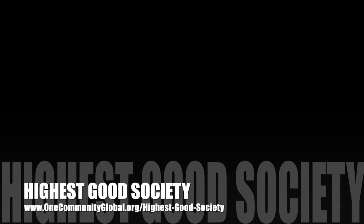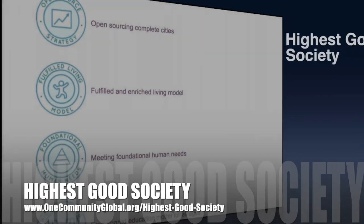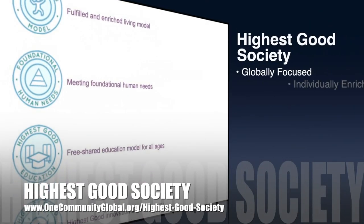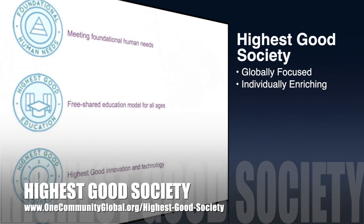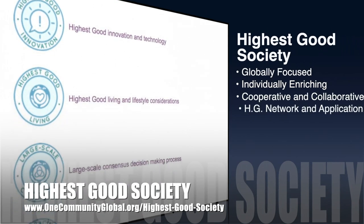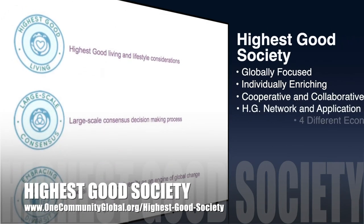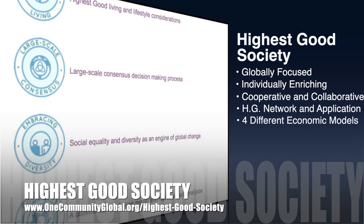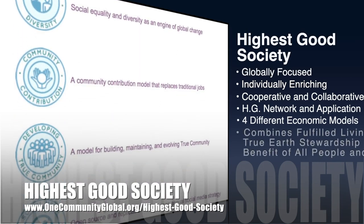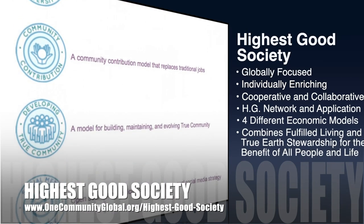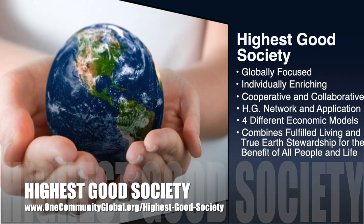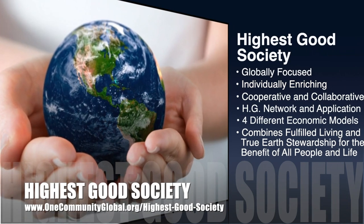The One Community approach to highest good society is globally focused, individually enriching, cooperative and collaborative, includes a highest good network and application, four different economic models, and combines fulfilled living and true earth stewardship for the benefit of all people and all life on this planet.